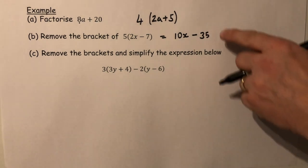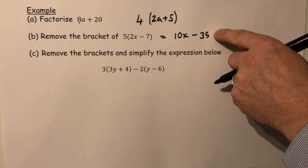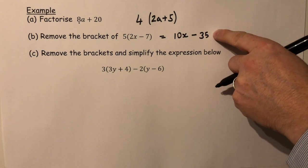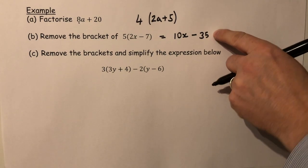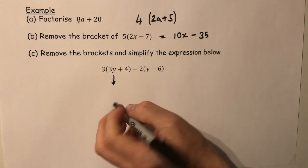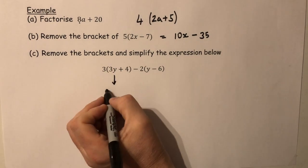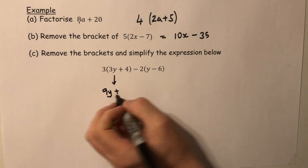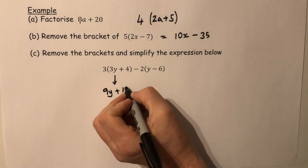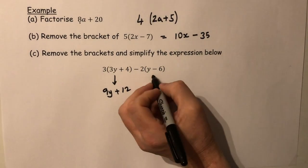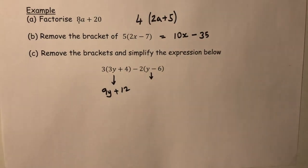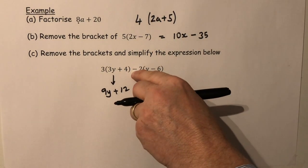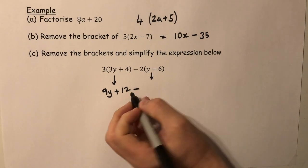And the final one is just an extension of this system, but we've got to be careful with our negative signs. Removing this bracket, three times three is nine, so that's 9y, plus sign, so plus sign, and three times four is twelve. Removing this bracket, care is needed because of that minus sign there. Most people are fine with this one.